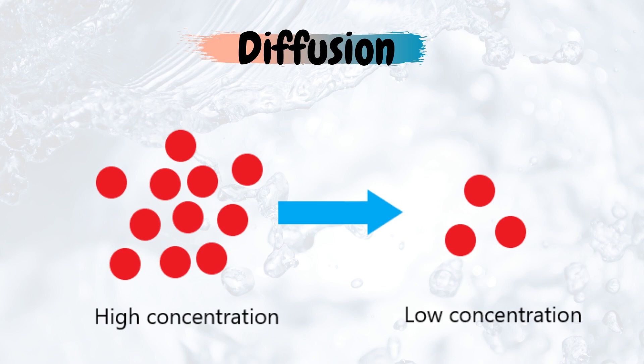Even when we add a food colorant into water, the particles of the food colorant will start spreading slowly but surely into that water until they are diffused evenly in that liquid. Diffusion in gases will happen faster compared to that of liquids.